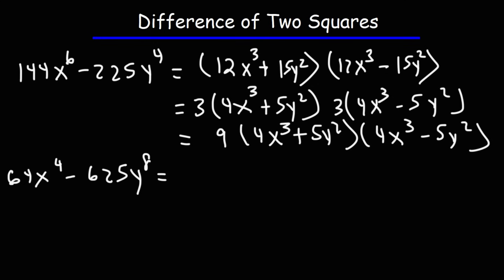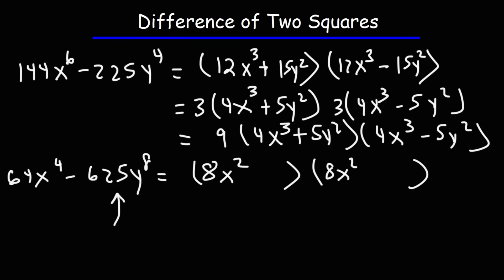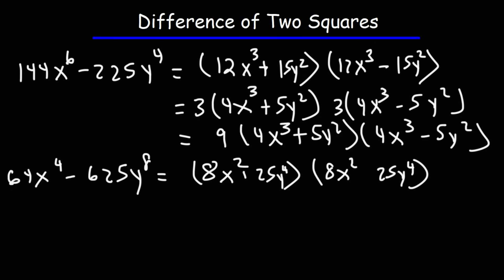Now let's solve 64x to the 4th minus 625y to the 8th. The square root of 64 is 8, and the square root of x to the 4th is x squared, giving 8x squared. The square root of 625 is 25, and the square root of y to the 8th — divide 8 by 2 — gives y to the 4th, so 25y to the 4th. We get 8x squared plus 25y to the 4th times 8x squared minus 25y to the 4th. We can't take the square root of 8 and get a nice number, so this is the end of the problem.